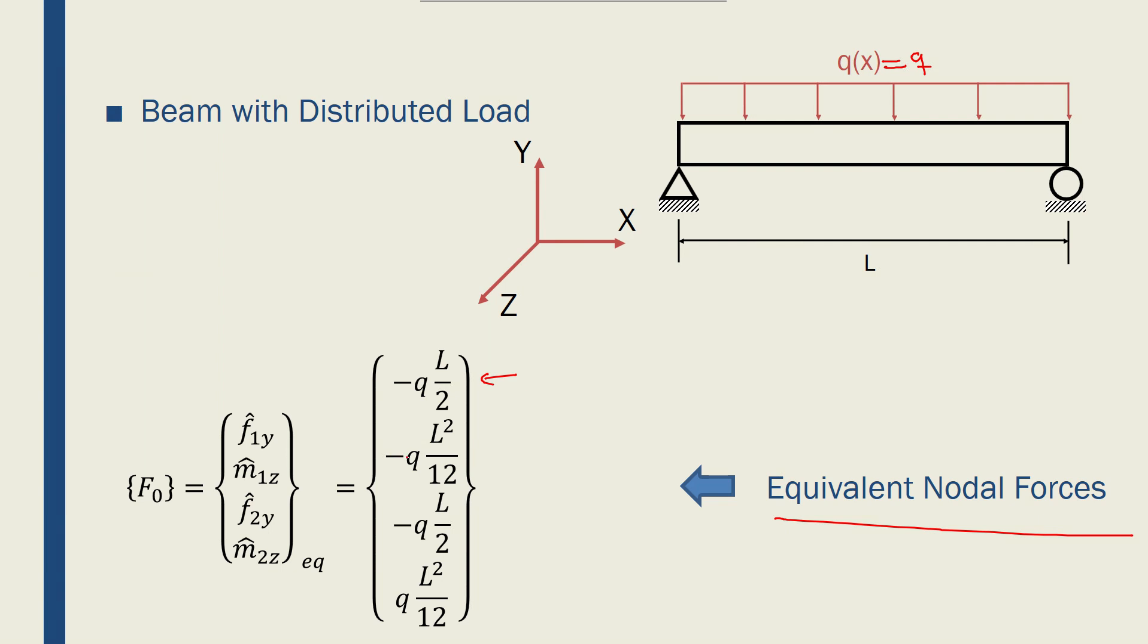Minus QL over 2, minus QL squared over 12, minus QL over 2, QL squared over 12. Now how do we use this?